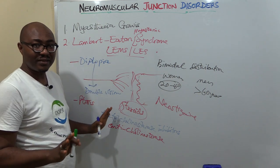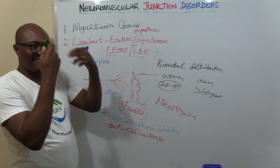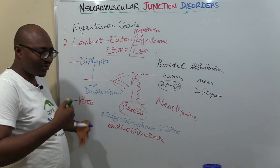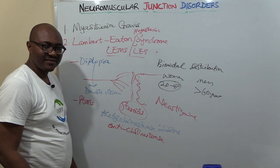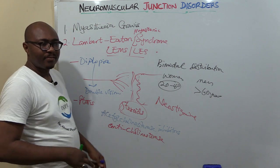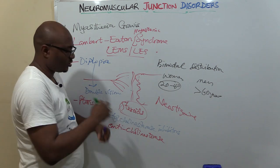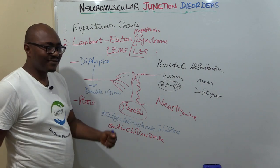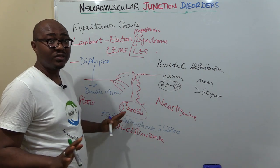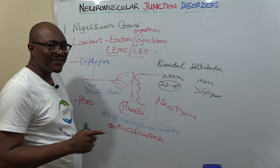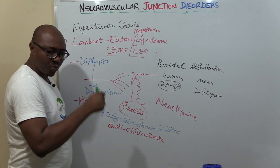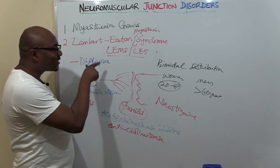They manifest similarly with muscle weakness, but here's the difference: while Myasthenia Gravis has preference for eye muscles and face, this one has more preference for the lower limbs, the leg muscles, and proximal limb muscles. Most times when they're walking or trying to climb stairs, they experience difficulty doing that.